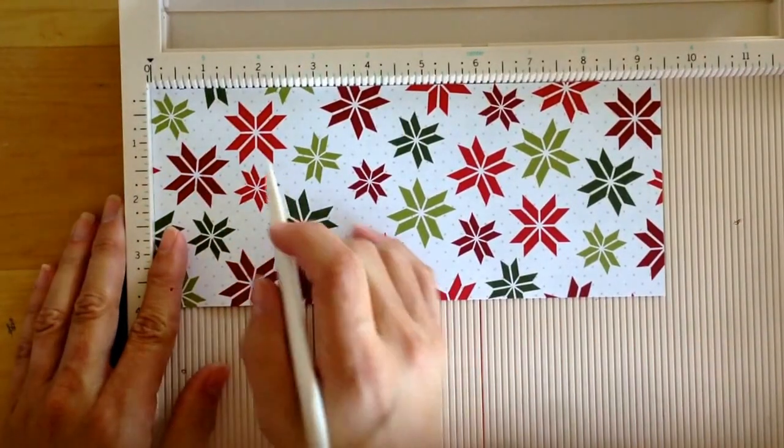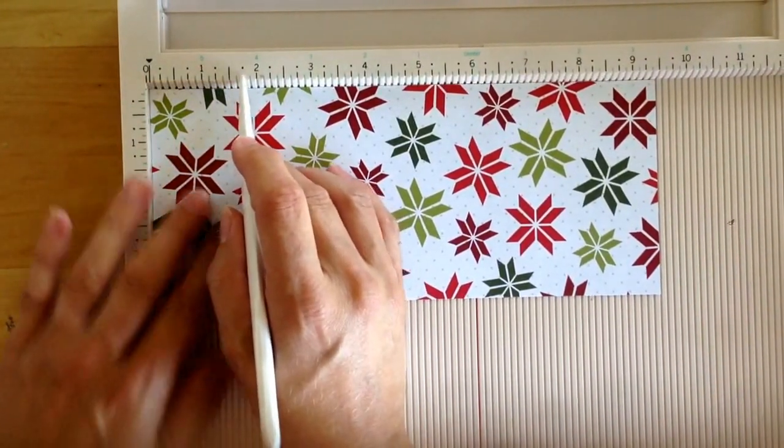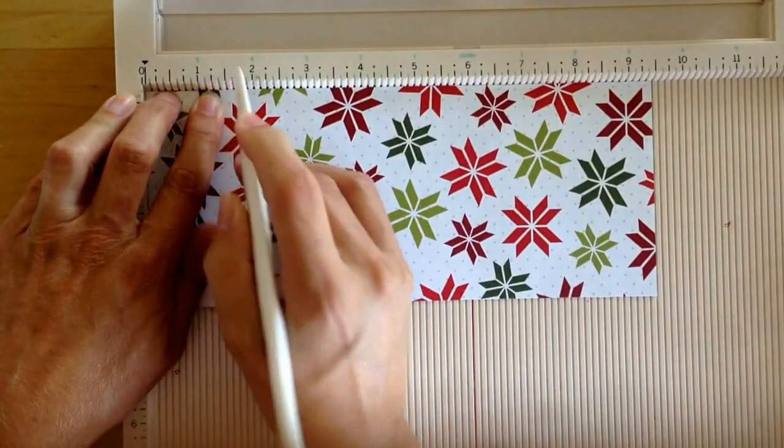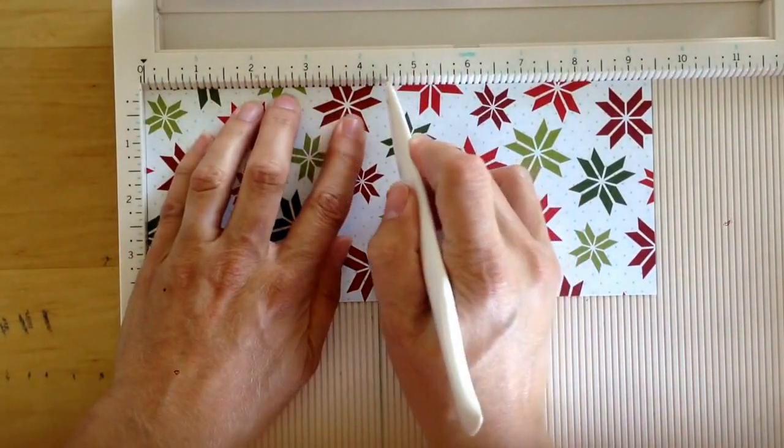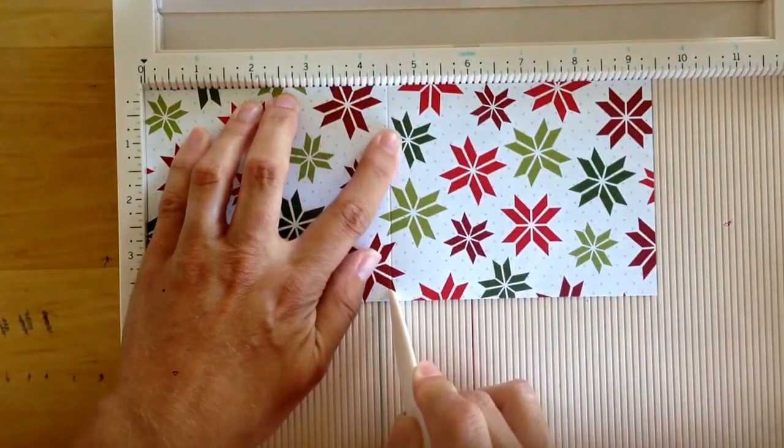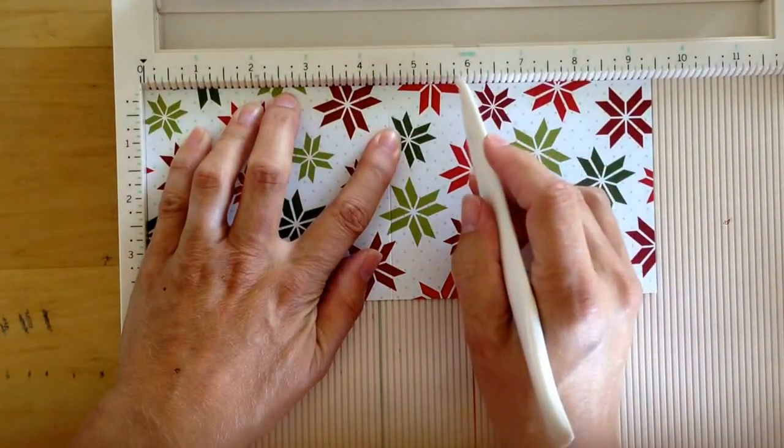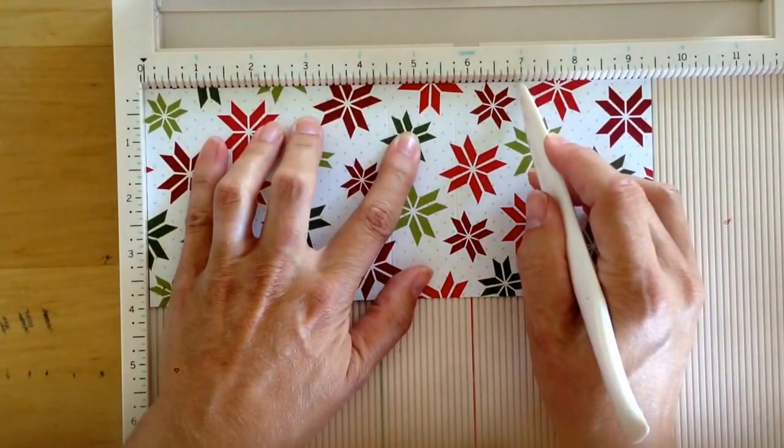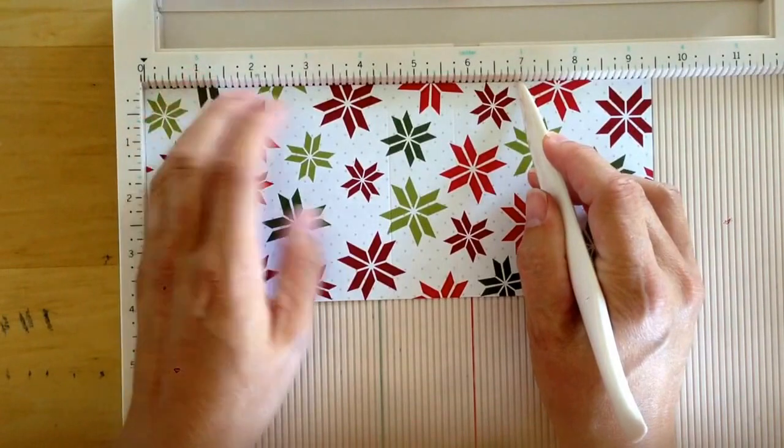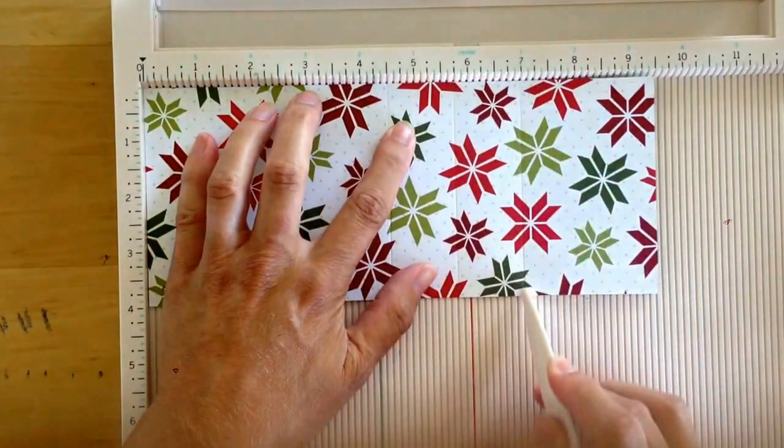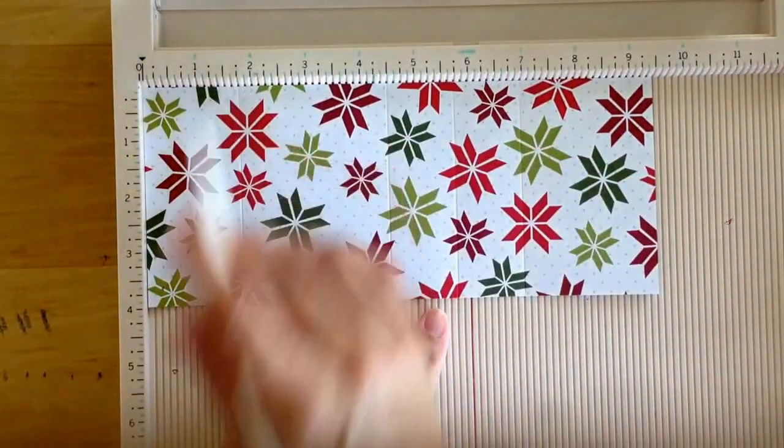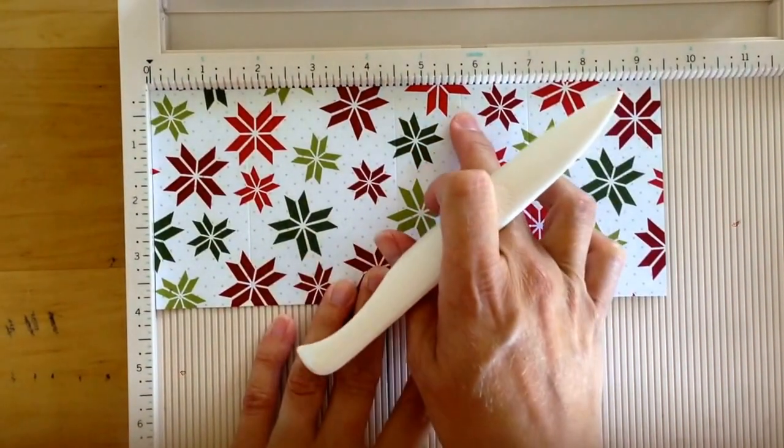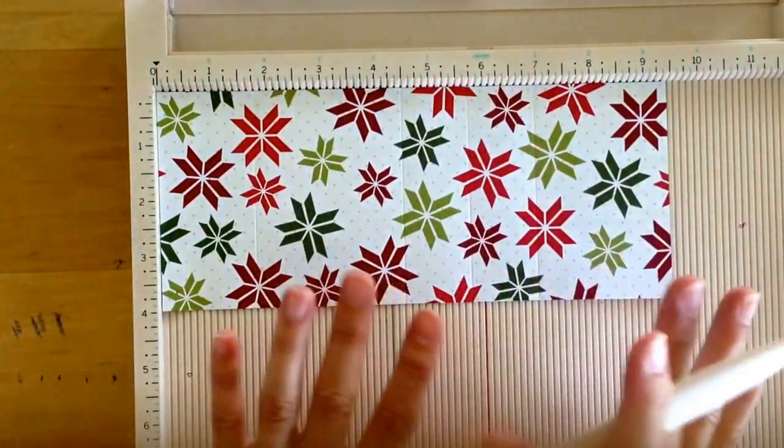So our score marks are going to be at one and three quarters. And then again at four and a half. Five and three quarters. And then seven inches.